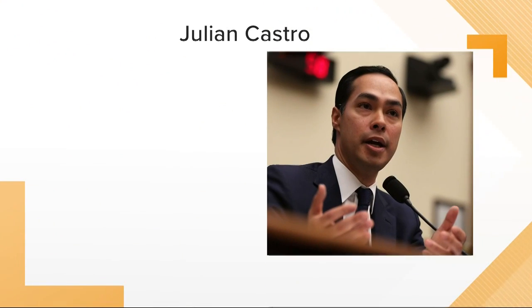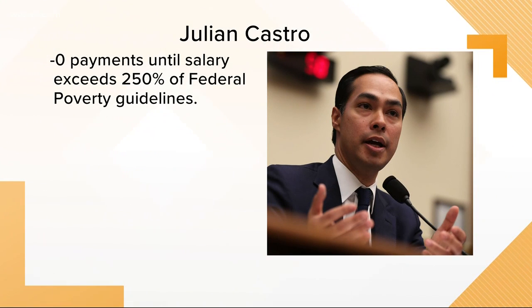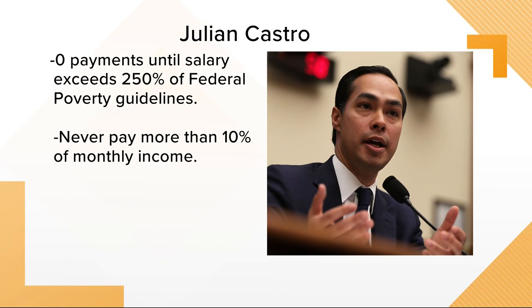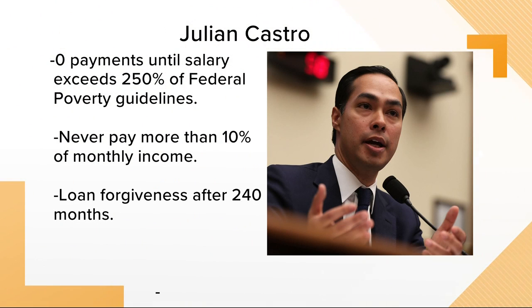Three of the Democratic candidates have released comprehensive plans to deal with the crisis. Take former HUD Secretary Julian Castro — he won't make students pay for debt after college until their salary reaches 250% of the federal poverty line, that's roughly $30,000 in most states. Then you never pay more than 10% of your monthly income, and after 240 months, or 20 years of payments, the debt is forgiven.